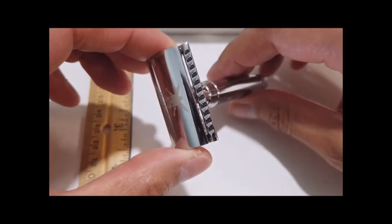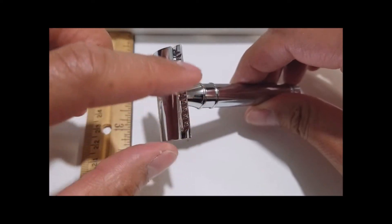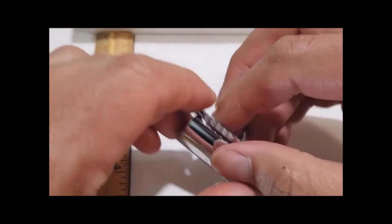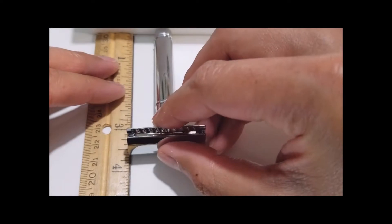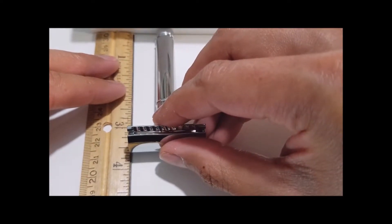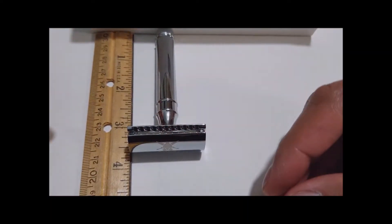The Dreadnought Spartan has a closed comb or safety bar razor head and measures about 3.75 inches from end to end.